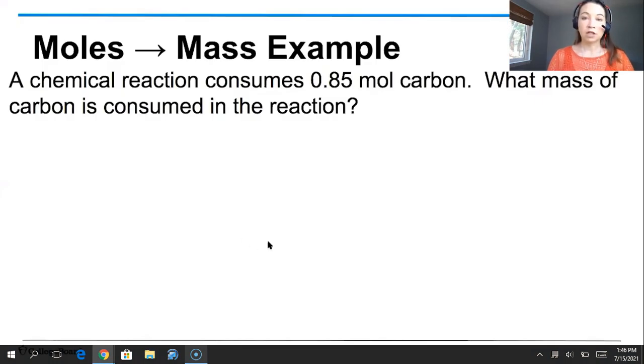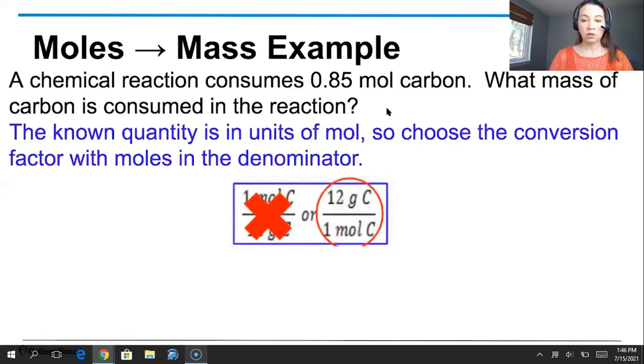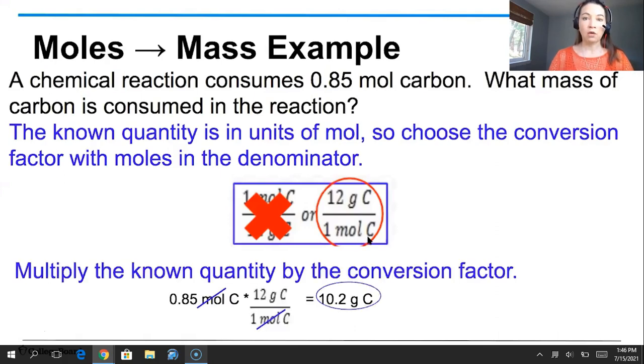A chemical reaction consumes 0.85 moles of carbon. What mass of carbon is consumed in the reaction? Well, here, our starting amount is in units of moles. That means we want a conversion factor that has moles in the denominator. So I want to choose the one on the right here because one mole of carbon is in the denominator. And now I just need to multiply my starting amount, 0.85 moles of carbon, by my conversion factor. And that will give me 10.2 grams of carbon. And notice that moles drop out. That's the whole point of having the unit in the denominator.